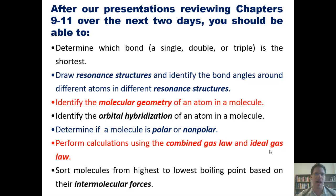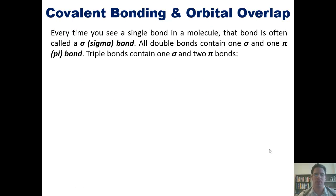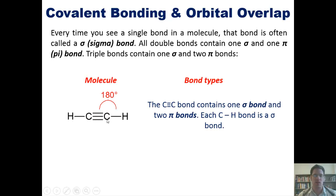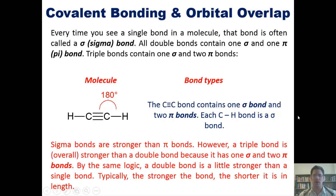Beginning with covalent bonding and orbital overlap: every time you see a single bond in a molecule, that bond is often called a sigma bond. All double bonds contain one sigma and one pi bond. Triple bonds contain one sigma and two pi bonds. For example, a carbon-carbon triple and a carbon-hydrogen single bond — the carbon-carbon triple contains one sigma and two pi's, while the carbon-hydrogen single contains one sigma. Sigma bonds are stronger than pi bonds. However, a triple bond is overall stronger than a double bond because it has one sigma and two pi bonds. By the same logic, a double bond is a little stronger than a single bond. Typically, the stronger the bond, the shorter in length it is.